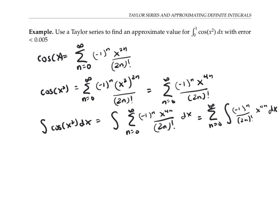Now, negative 1 to the n and 2n factorial only involve n's, not x's. So those are constants for the integration. I can put them on the side and just integrate x to the 4n,